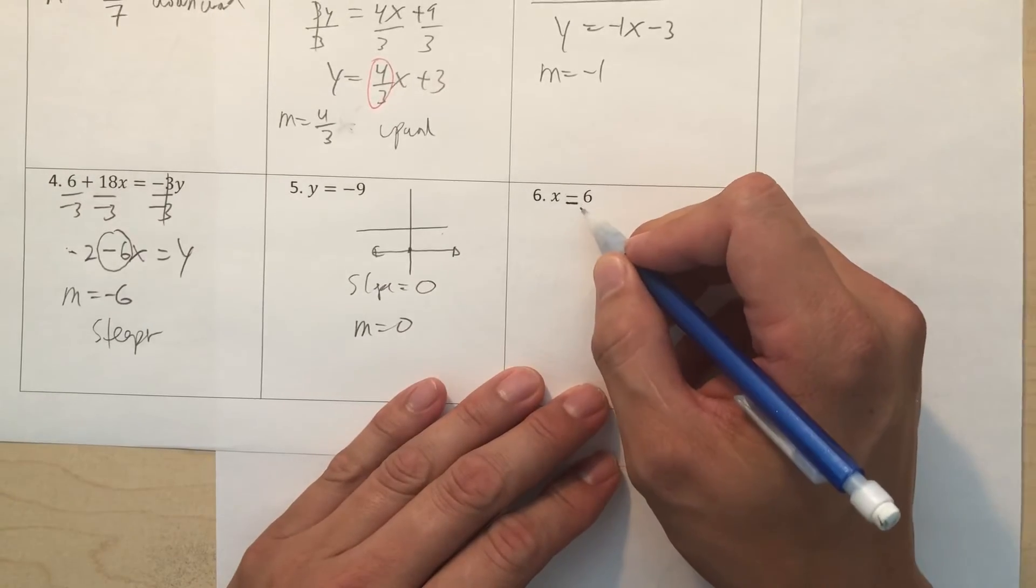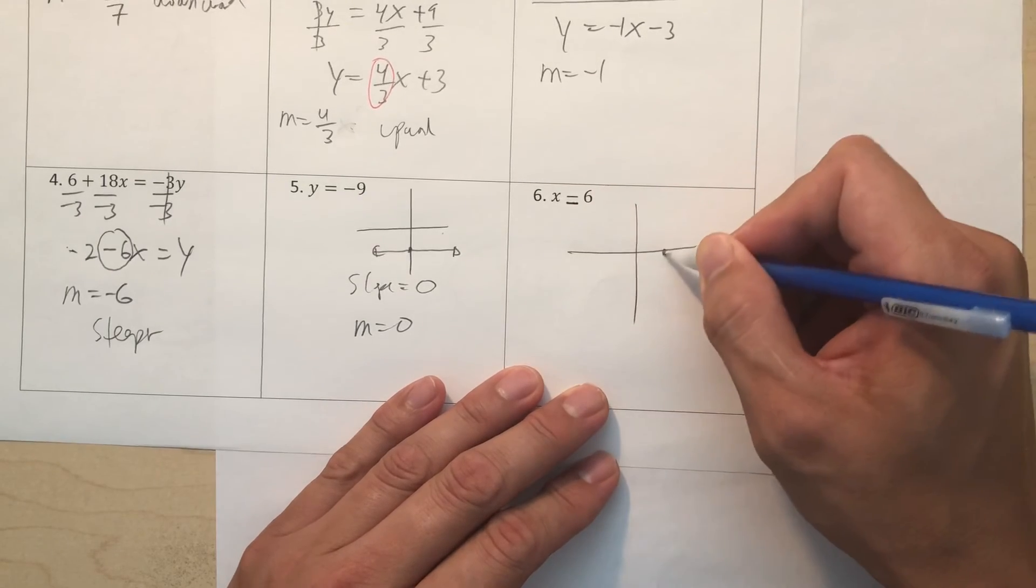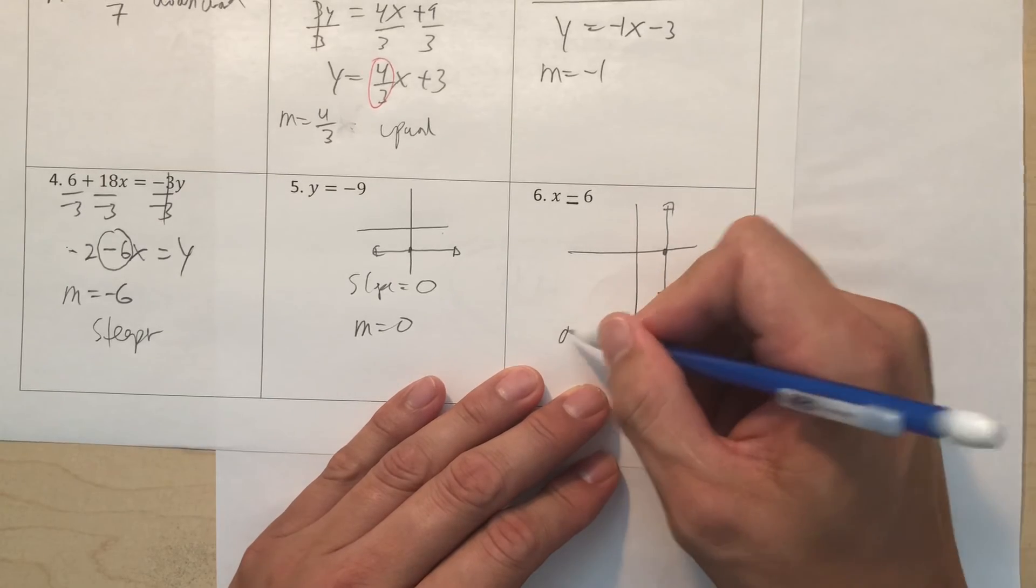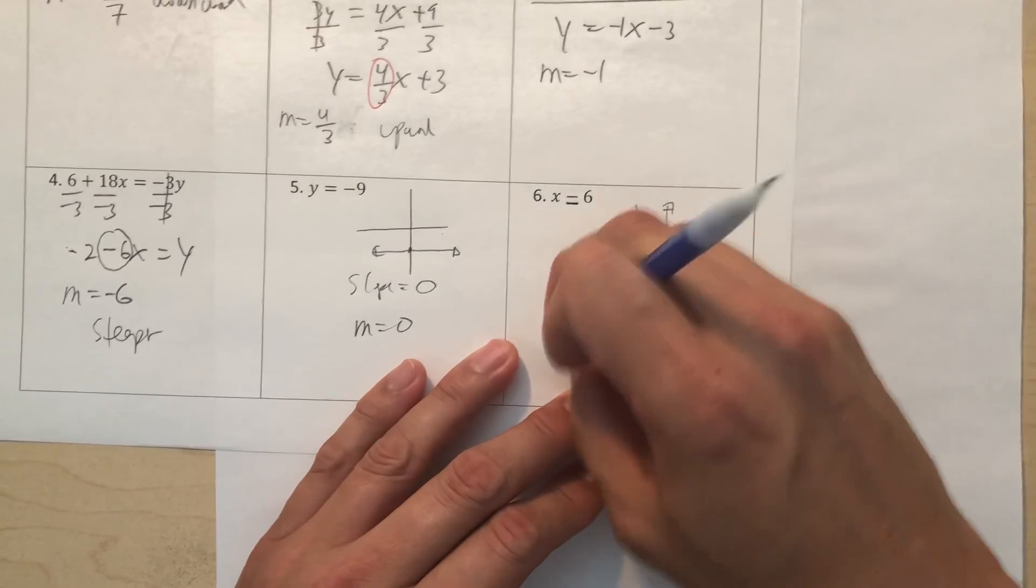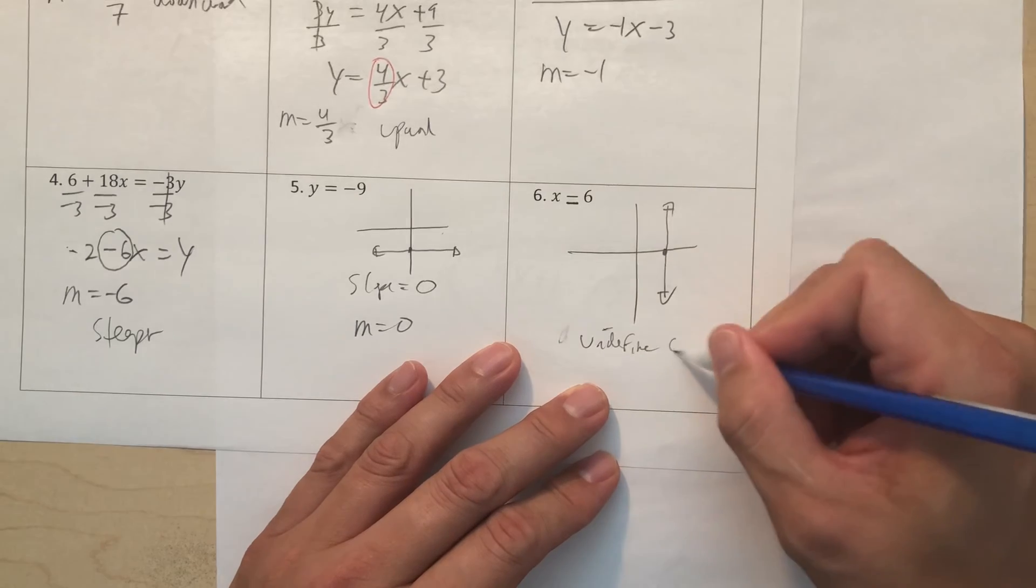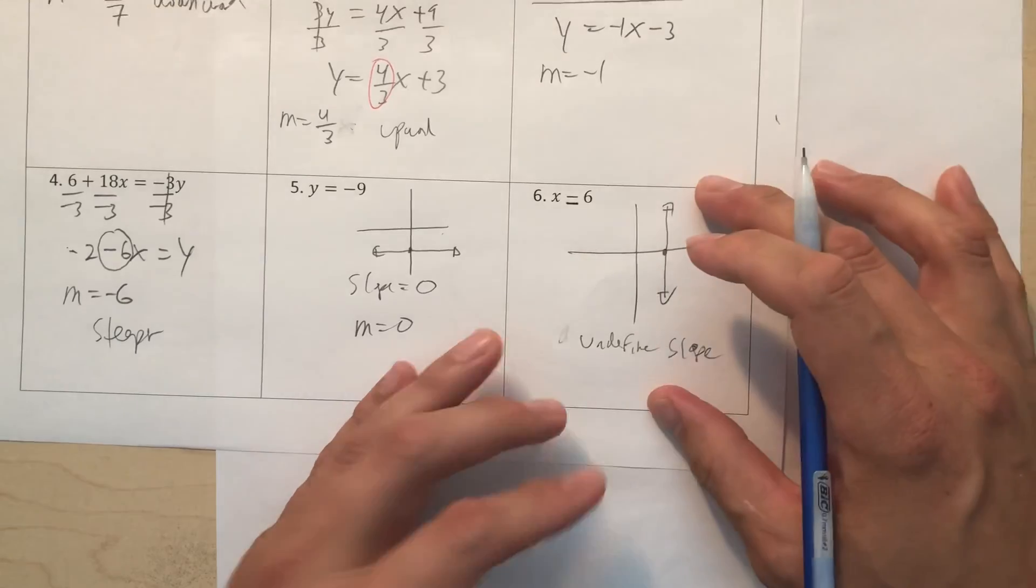This one here, we talked about it on my other video. This graph is actually vertical. So this one here is undefined. Oops, write this down real fast. Undefined slope. Now, you can just write undefined is good enough. Thank you, and that's it.